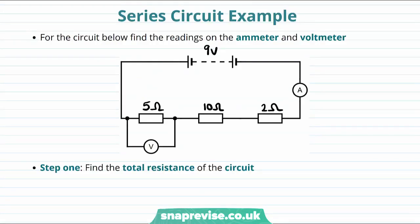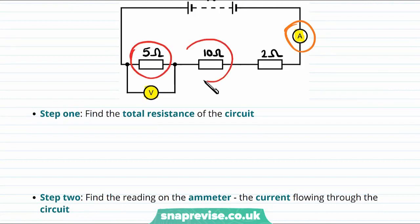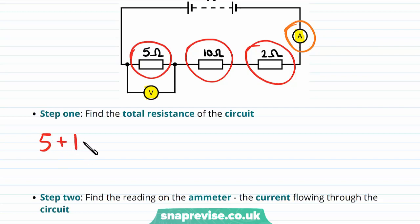Let's have a go at an example of a series circuit. We need to find the readings on the ammeter and the voltmeter. To find the current we use V equals IR with the total circuit voltage and total circuit resistance. First, we find the total resistance: for the three resistors connected in series, their resistances add — so the total resistance is 5 plus 10 plus 2 ohms, which equals 17 ohms.